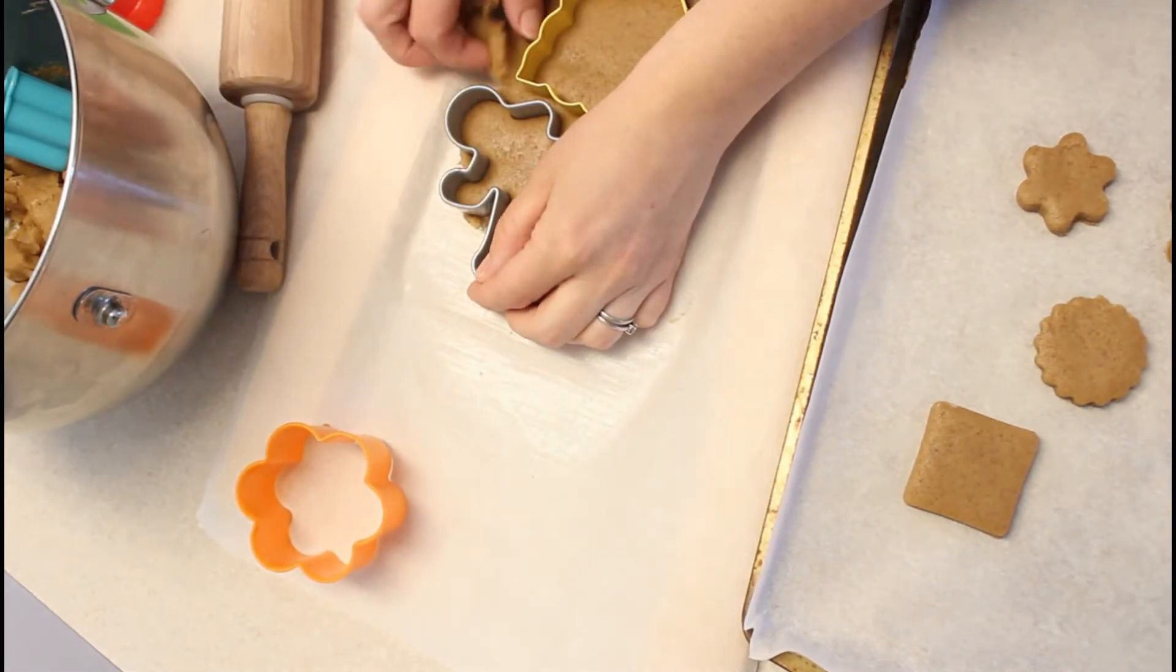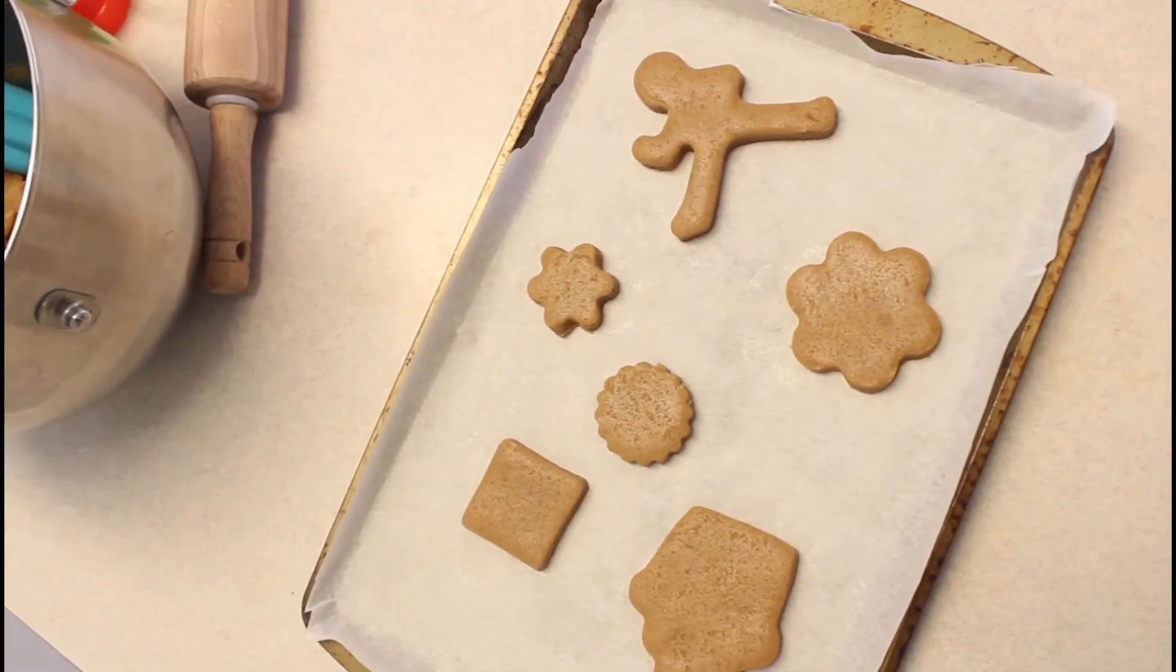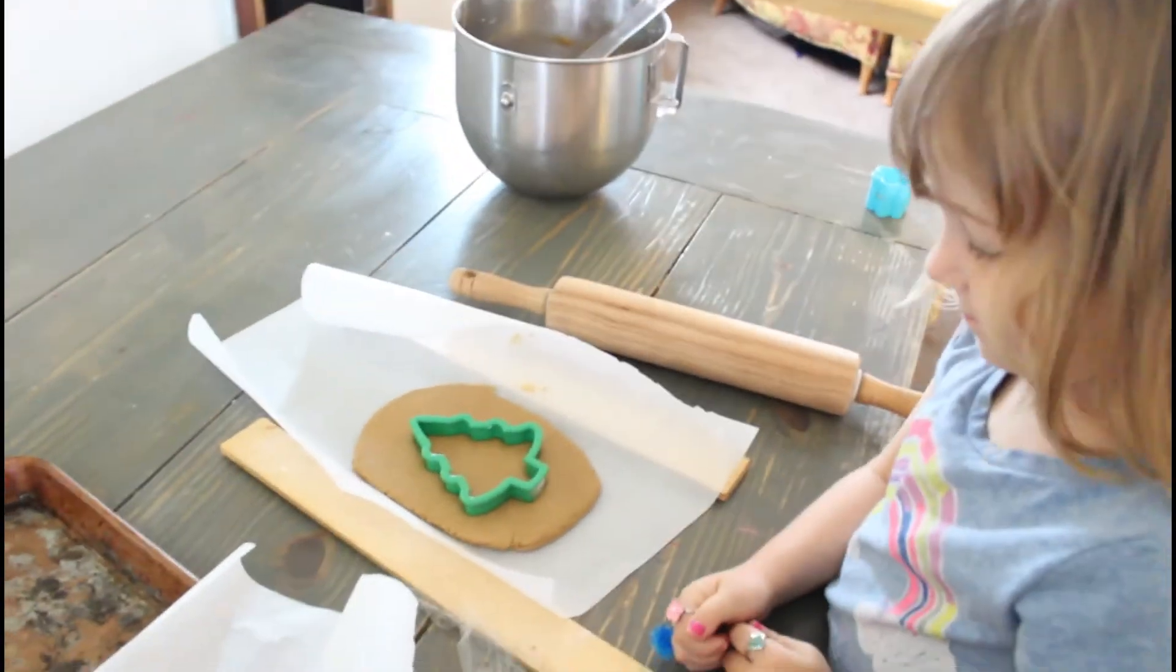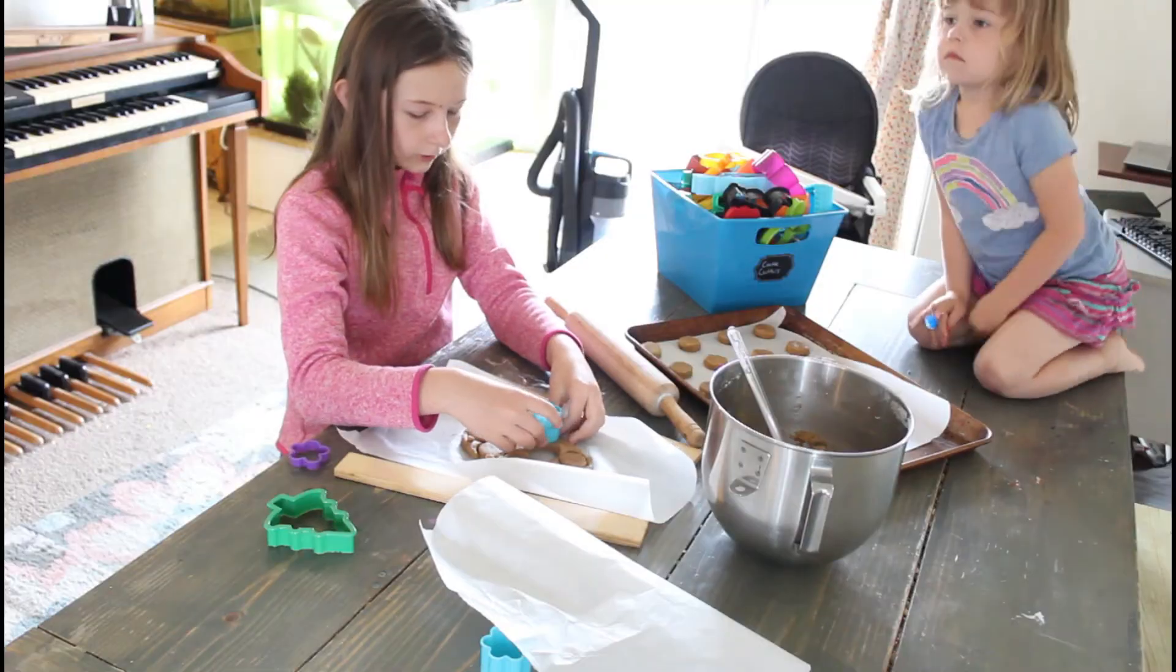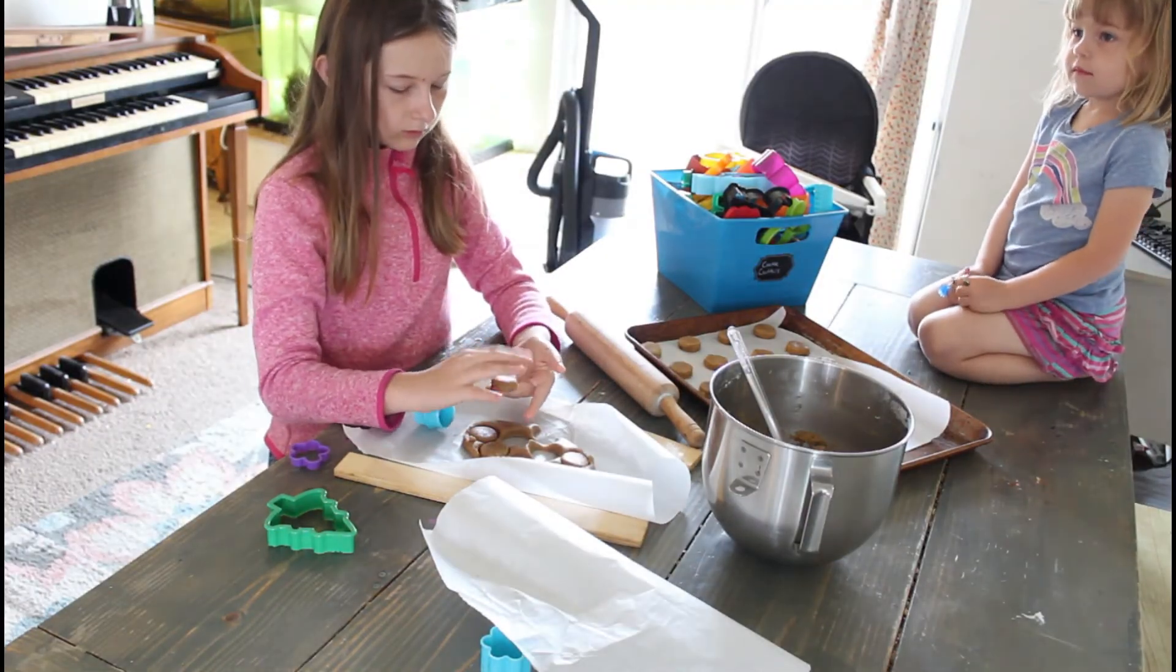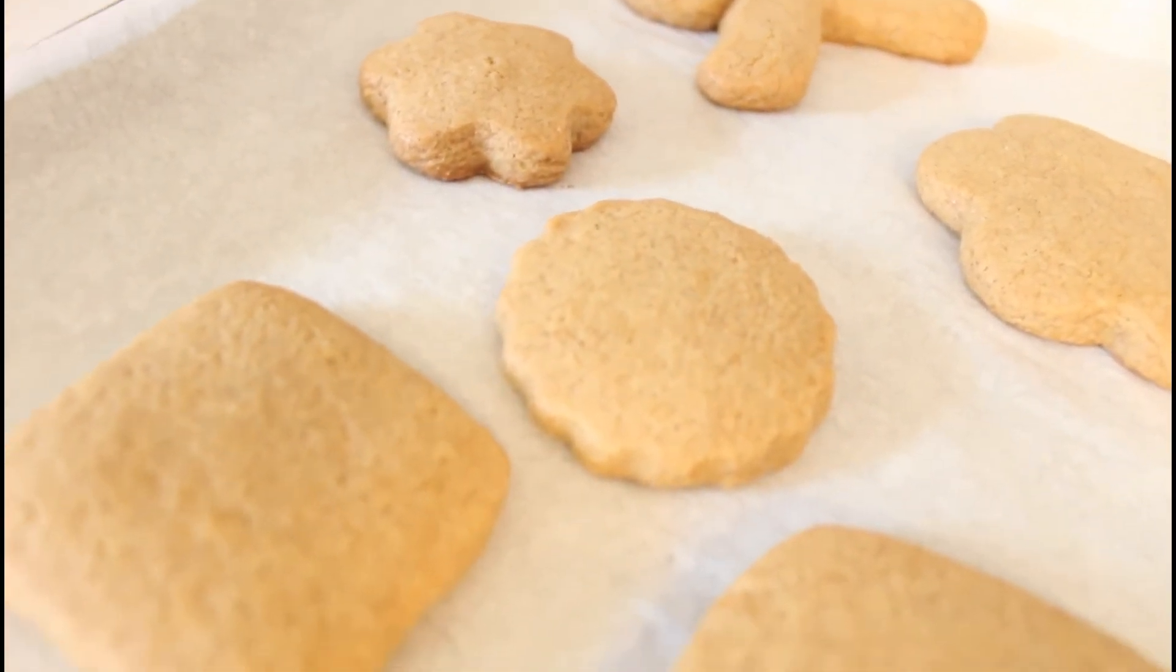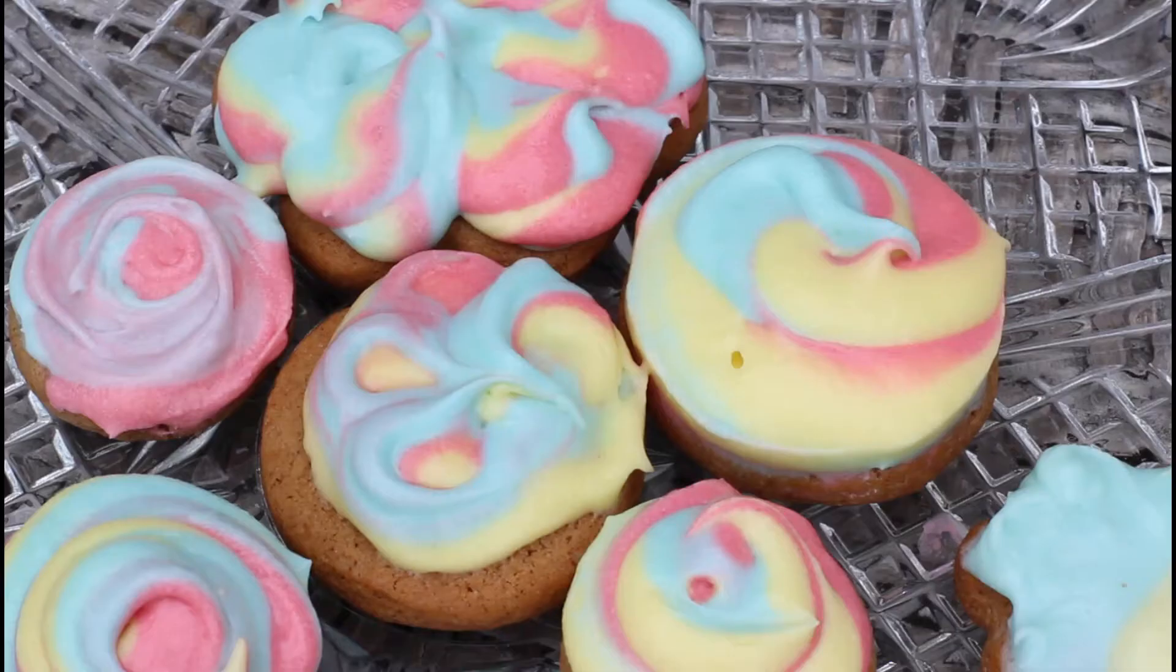Cut your dough out into shapes and bake at 350 degrees for about 9 minutes or until the bottom is a little bit brown. Let the cookies cool then frost them however you like. And you're finished with the cookies!